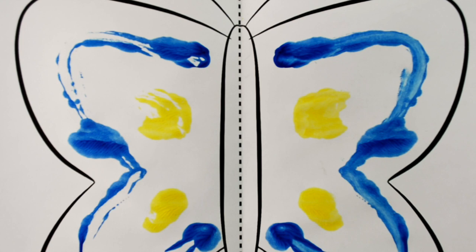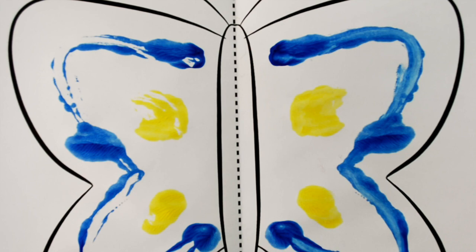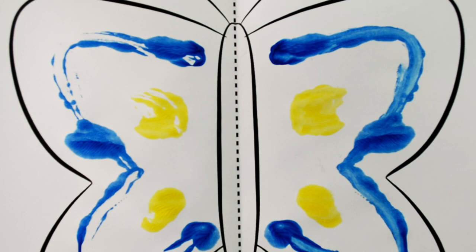So then we put the butterflies away to dry and I have them talk to a partner about what they noticed. So after that we talk about it as a group. We talk about the fact that what was on one side is on the other side and how that's true of real butterflies too. And at that point I do introduce the word symmetry.